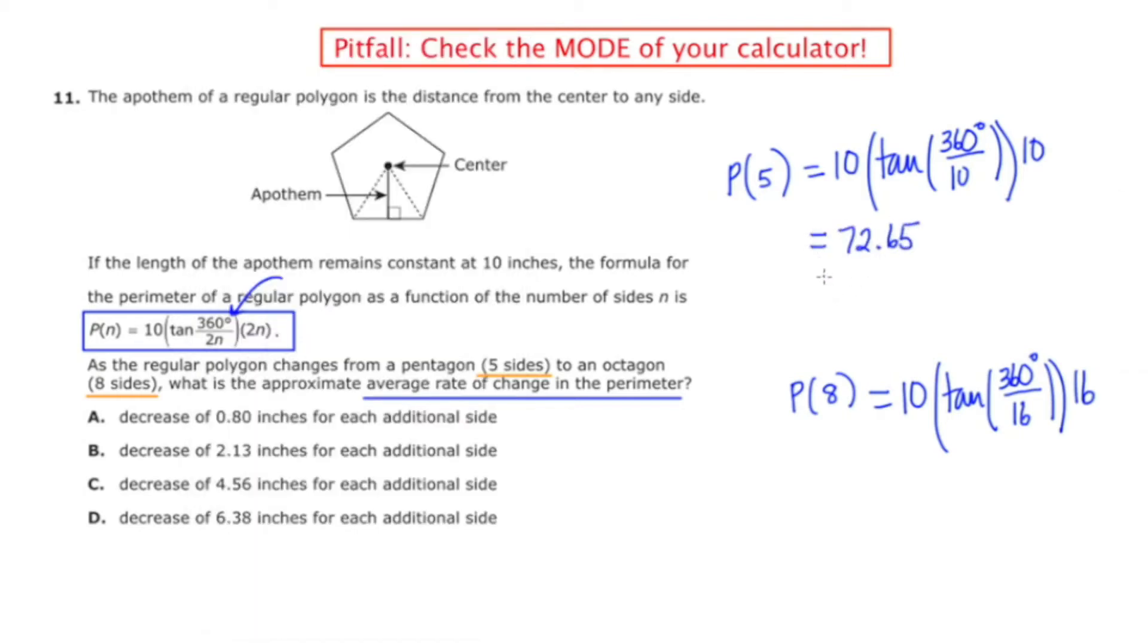And this is going to suggest an ordered pair, and the ordered pair is, when I plug in 5 as my input, my output is 72.65. I'll put a little box around that, because that's probably the most important part of that part of the problem.